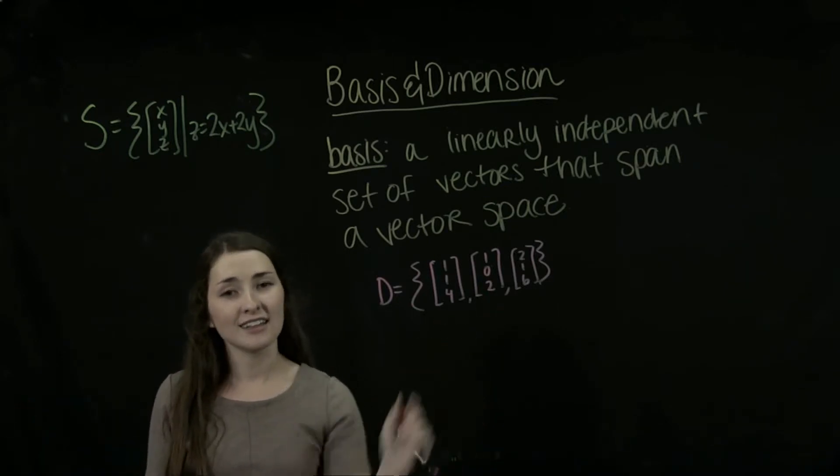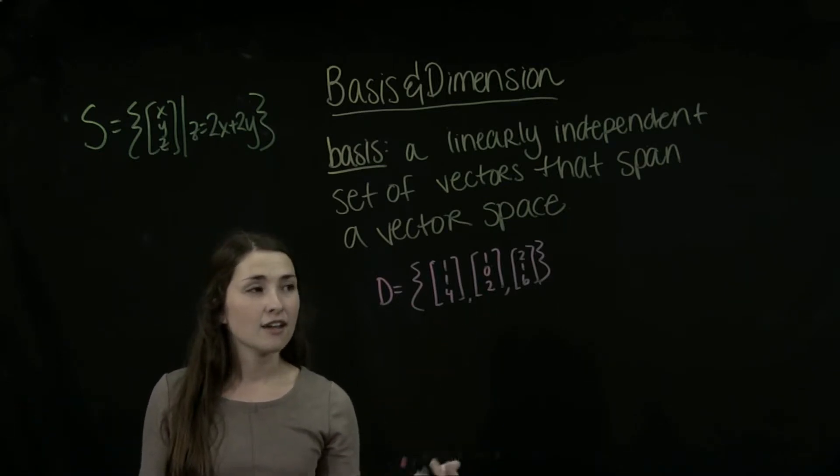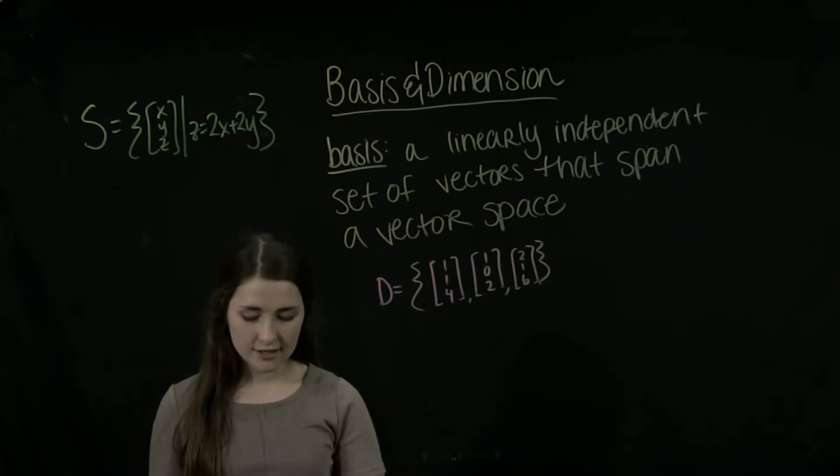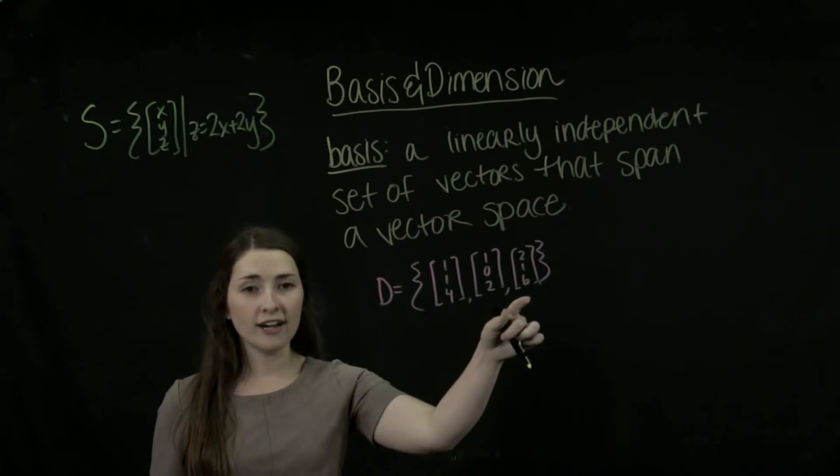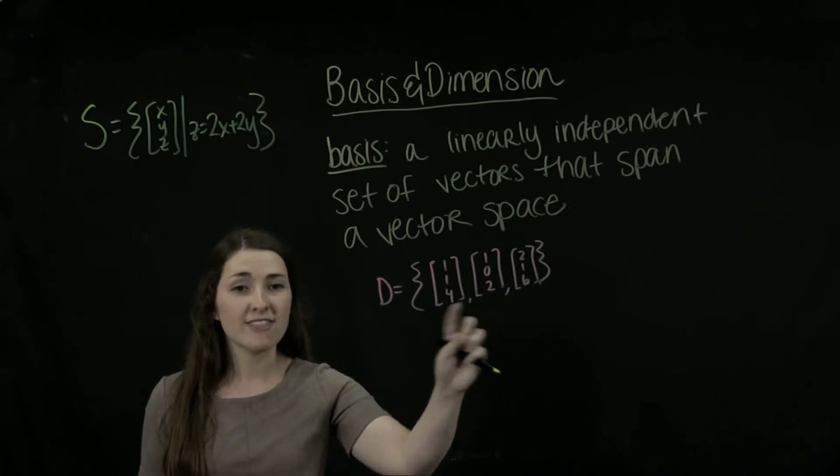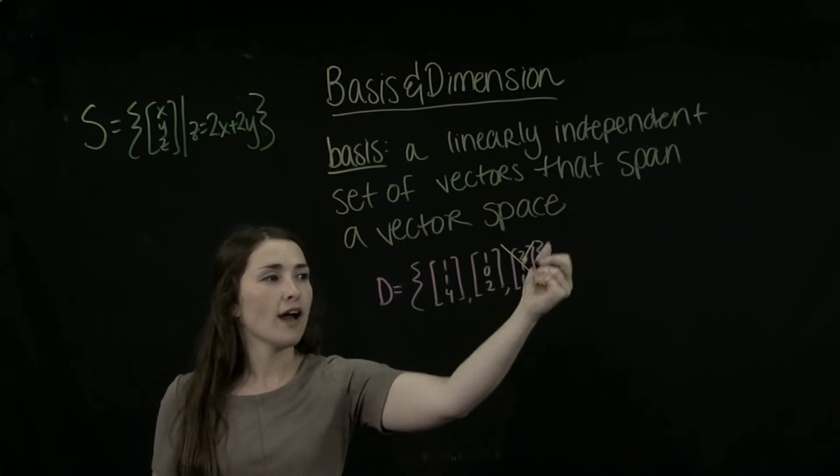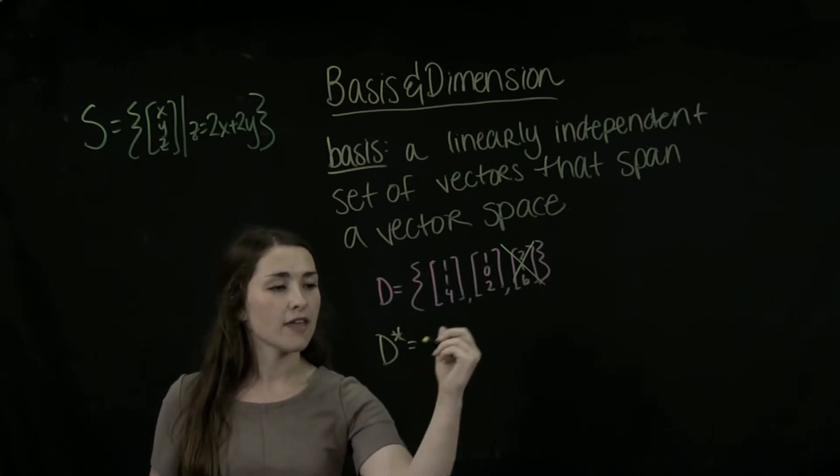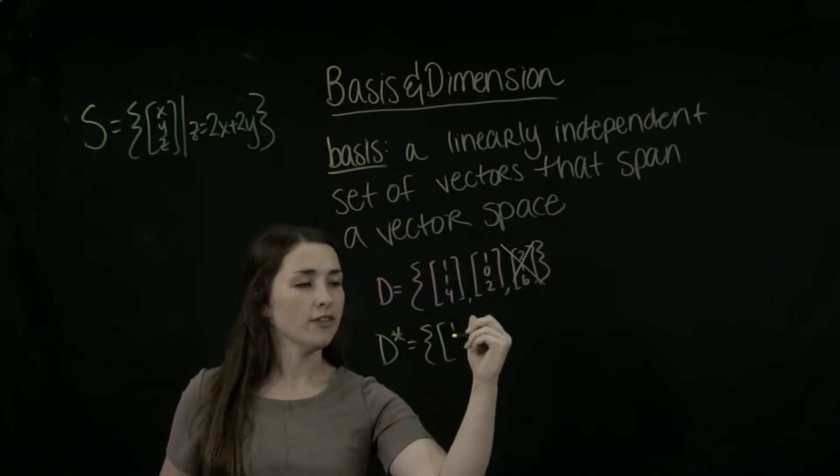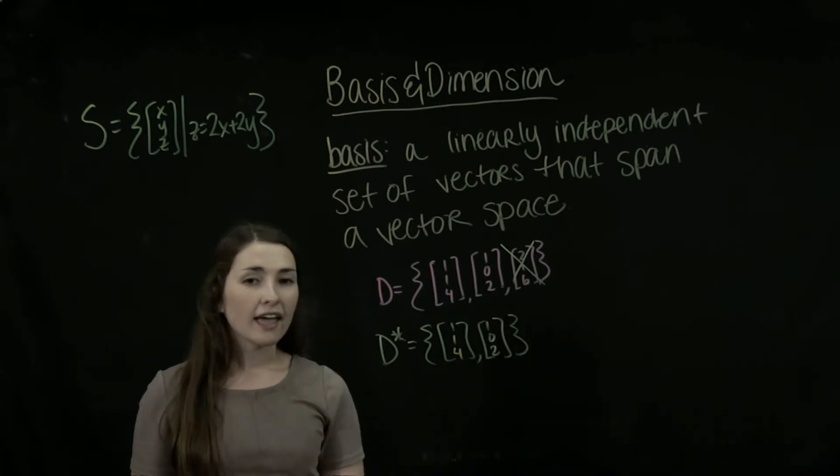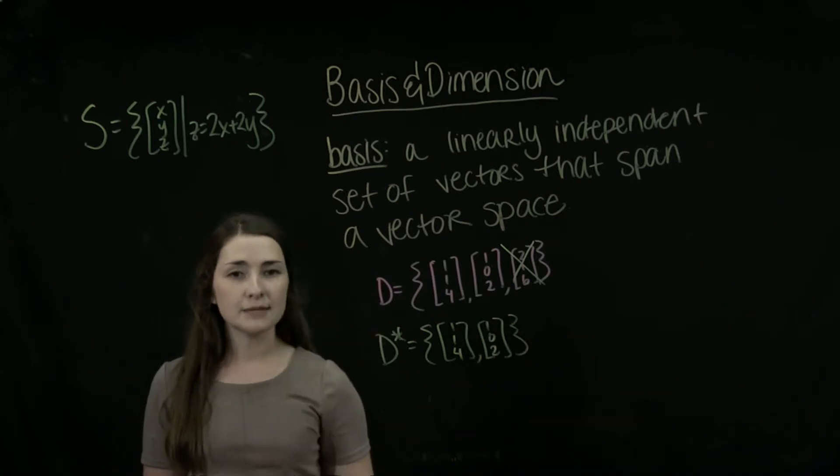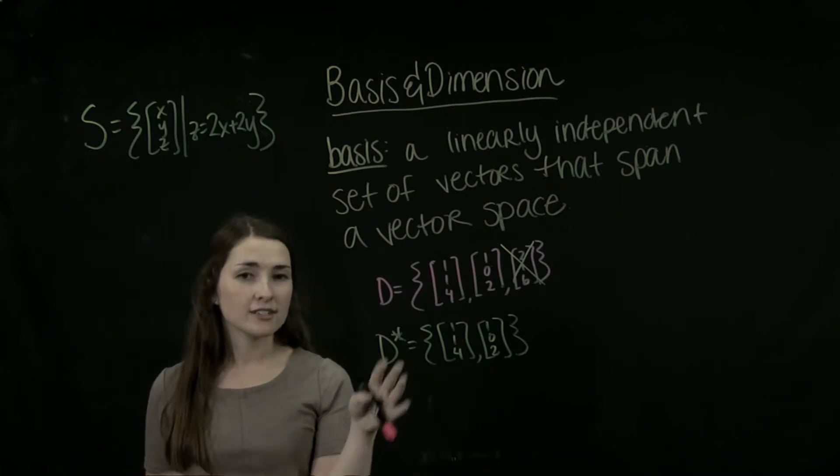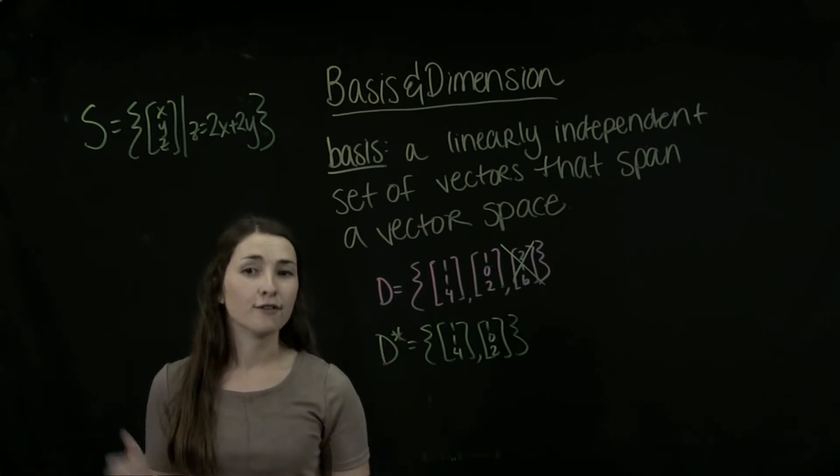So these are not linearly independent. So what we can do is we can actually just delete one of our problem vectors. So since we know already that this one is a linear combination of these two vectors, we can go ahead and delete it. And we'll make our new D star. And that's going to be equal to the other two vectors. And because D span all of S, we know that D star is also going to span all of S.